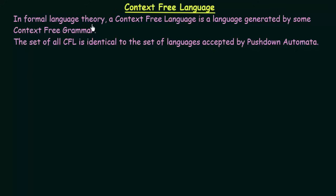In formal language theory, a context free language is a language generated by some context free grammar. Just like regular languages were generated using regular grammar, languages generated using context free grammar are known as context free languages. The set of all context free languages is identical to the set of languages accepted by pushdown automata.